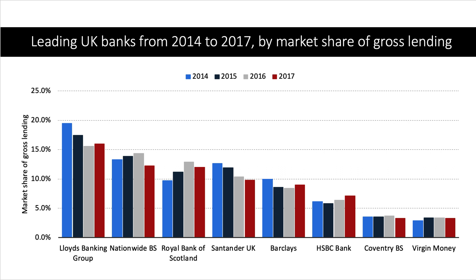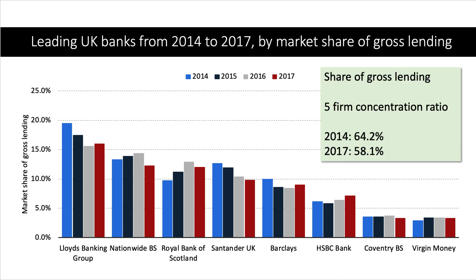One way we measure the concentration of a market is by thinking about the concentration ratio. Taking the top five firms and adding together their market share: in 2014, the top five firms accounted for 64% of all lending — a good confirmation that this is an oligopolistic market. It is still essentially an oligopoly, but by 2017 that percentage has fallen to 58%, partly because there is now more competition in the retail banking market in the UK.